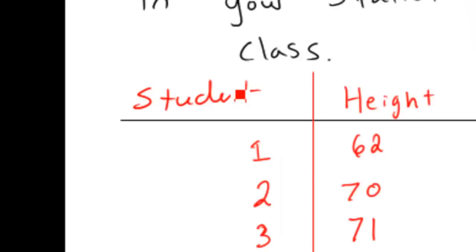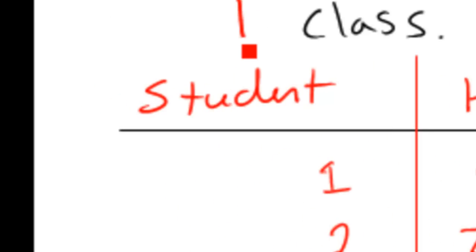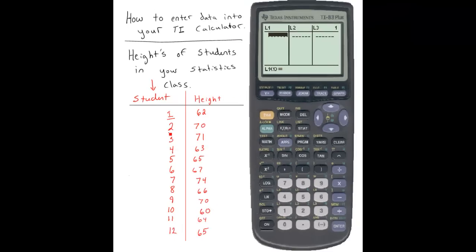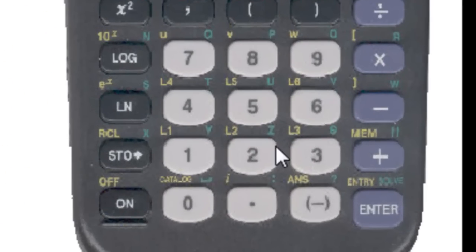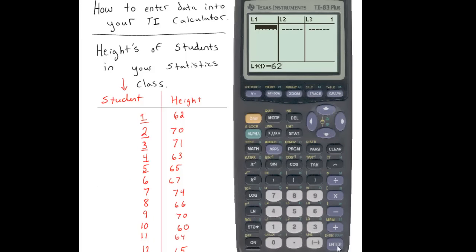In this column here, these are all of the student numbers — the first student, second student, third student, fourth student, fifth student, and so on. I don't have to put this into my calculator because there's no necessary order for putting data in, since later we may want to sort it. So let's just enter in the values: 62, 70, 71, and so on. Just enter the values like you normally would and then hit the enter key.